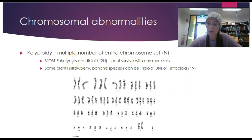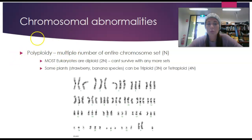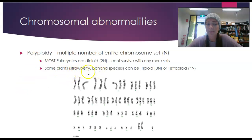Polyploidy is where the entire set of chromosomes has a different number to normal - as opposed to aneuploidy, which affects one single chromosome. Most eukaryotes are diploid and can't survive with more sets. Triploidy - three sets of chromosomes - is too catastrophic to human development. We see polyploidy more commonly in plants. Strawberries and bananas can be triploid, having three sets of chromosomes in their karyotype, or even tetraploid with four sets.